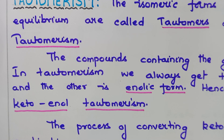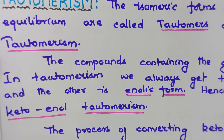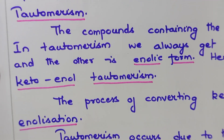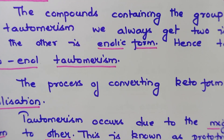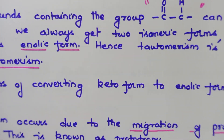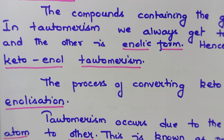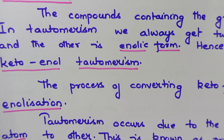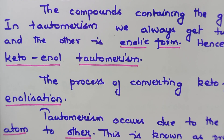The keto form is converted into the enolic form, and this process is called enolization. So write: conversion of keto form into enolic form is called enolization. Kindly underline the word 'enolization.'